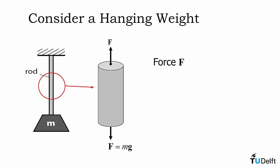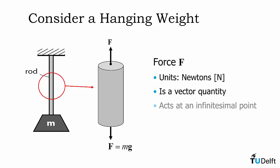But what else do we know about this force F? We know that it has the units of Newtons. We also know that it's a vector quantity with both a magnitude and a direction. We know that it acts at an infinitesimal point. The force, as all forces, is a resultant of an interaction. In this particular case, the interaction is between the acceleration due to gravity and the mass in the weight.